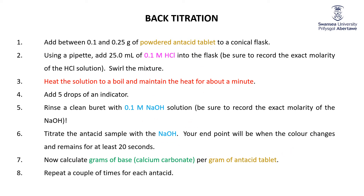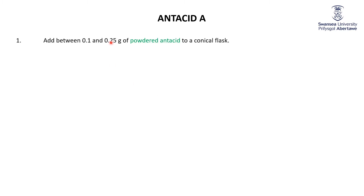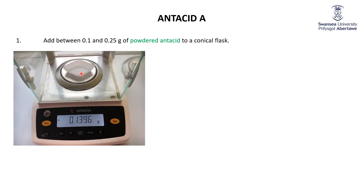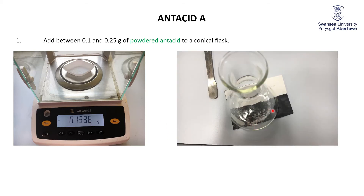I'm going to give you several sets of data for each of two antacids. Here we're doing the experiment for antacid A. Add between 0.1 and 0.25 grams of powdered antacid to a conical flask — there I am weighing it out. You can see the analytical balance giving us four decimal places. For this first trial, we got 0.1396 grams of powdered antacid, which includes both the base and the filler. Then stick it in a conical flask.